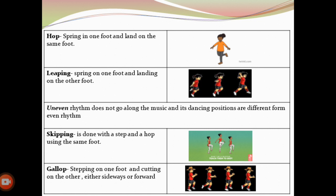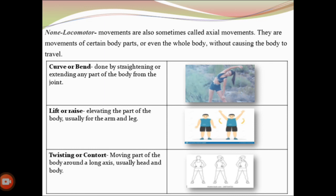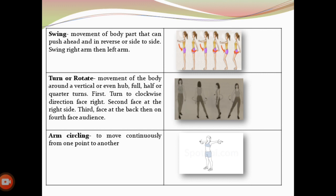The second classification is non-locomotor movements, also sometimes called axial movements. They are movements of certain body parts or even the whole body without causing the body to travel. An example is curve or bend — done by straightening or extending any part of the body from a joint. Second is lift or raise — done by elevating a part of the body, usually the arm or leg. The twist or contort — done by moving a part of the body around the long axis, usually the head and body. The swing — movement of the body part that can push forward, in reverse, or side to side. Next is turn or rotate — movement of the body around the vertical axis: full, half, or quarter turns.